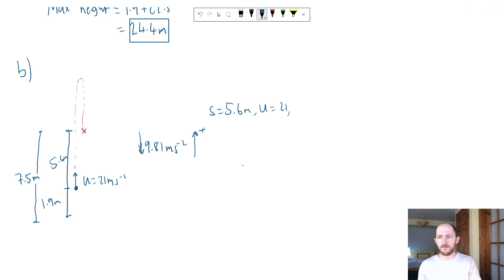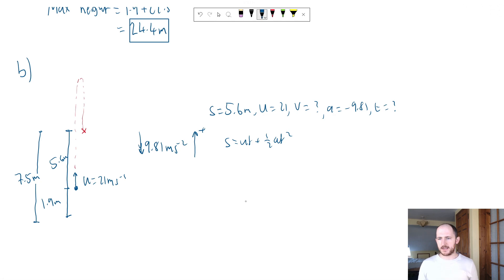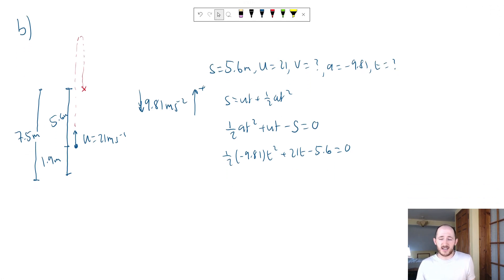U, yet again, is going to be 21. V, I'm going to put don't know for now. A is going to be negative 9.81. And T is exactly what we're working out. So if I write out the equation S equals UT plus half AT squared, we actually have all of the information we need for this one. And then all we're going to do is solve the quadratic and that gives us our answer for six marks. Since we know it's a quadratic, what we could do is move everything to one side. So we know it's going to be half AT squared plus UT minus S equals zero. And then we can sub in our stuff.